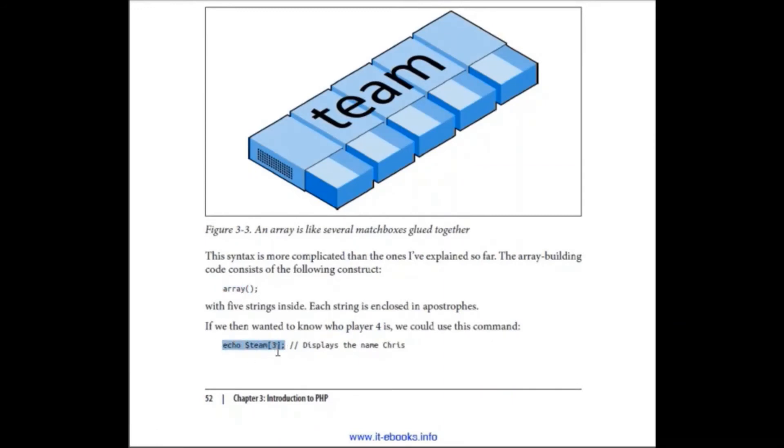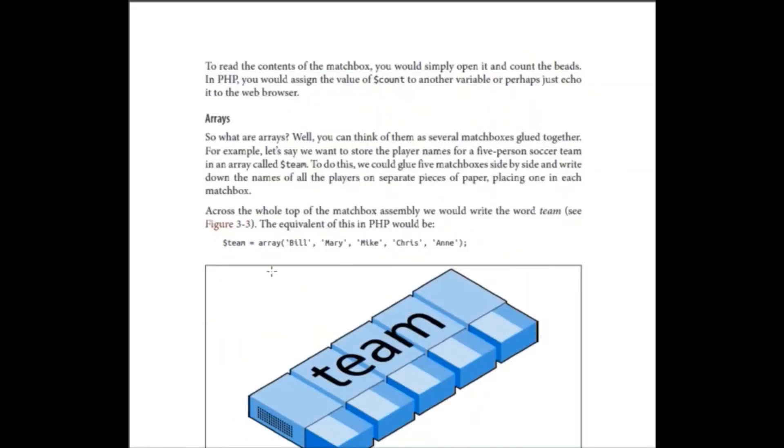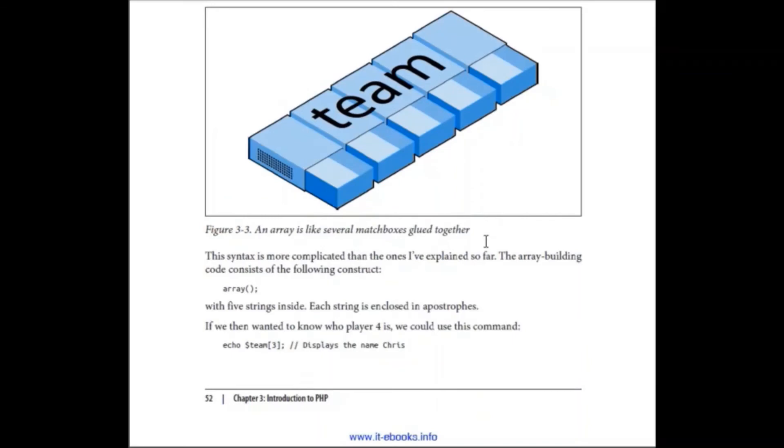And when we echo team[3], what will be printed? Team zero is at zero location. We have Bill, one Mary, two Mike, and at index three we have Chris. So Chris would be printed. See, it displays the name Chris. That's how you will access the elements of array.